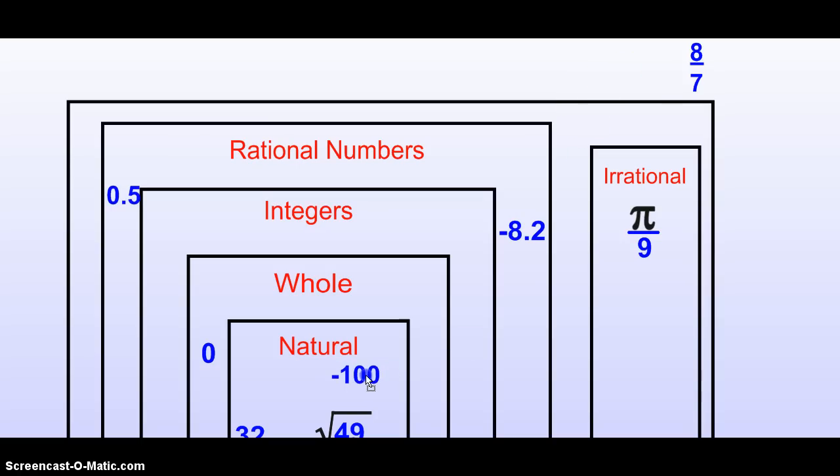Negative 100. Not natural. We don't have negatives there. It's not whole. We don't have whole numbers there. But it will be an integer. Because it's a negative whole number. Therefore, that will be an integer.